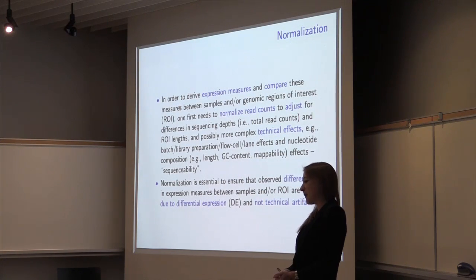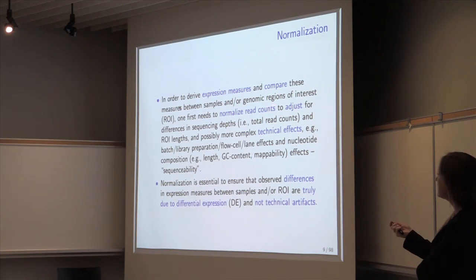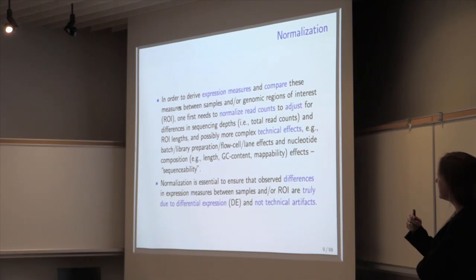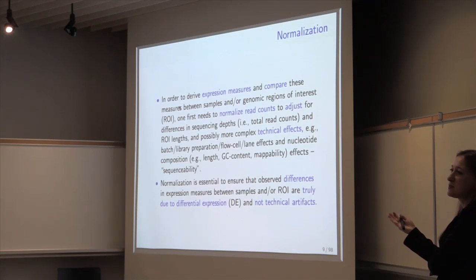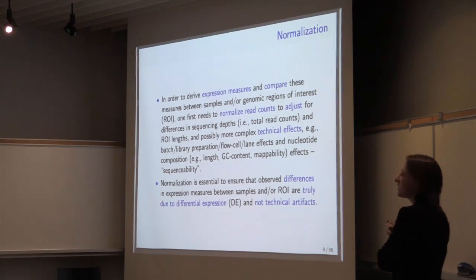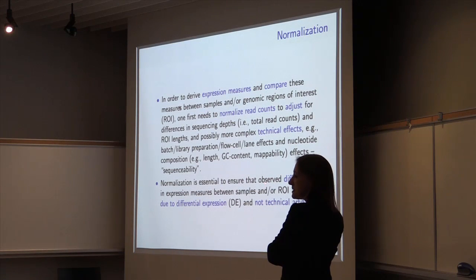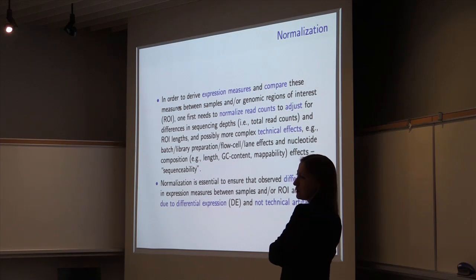What about normalization? In order to derive expression measures and compare them between samples for genomic regions, we first need to normalize read counts to adjust for obvious differences in sequencing depth between lanes, and also differences between genomic regions — genes of different length or different GC content. But there are possibly more complex and subtle technical effects that we need to adjust for, such as batch, library preparation, flow cell effects, and nucleotide composition effects like GC content and mappability. Normalization is essential to ensure that differences in expression measures, between samples or genomic regions, are related to differences in expression and transcription, and not technical artifacts.